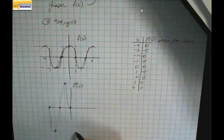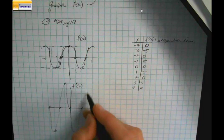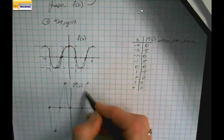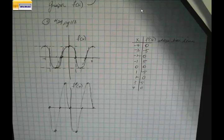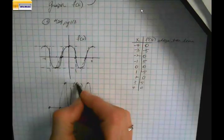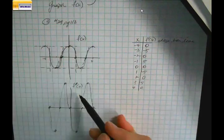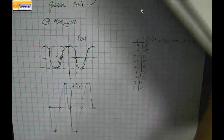When x = 1, y = -5. When x = 2, y = 0. When x = 3, y = 5. When x = 4, y = 0 again. So the first derivative also looks like a wave. This is the function f(x), and this is the first derivative of the function — we see another wave.